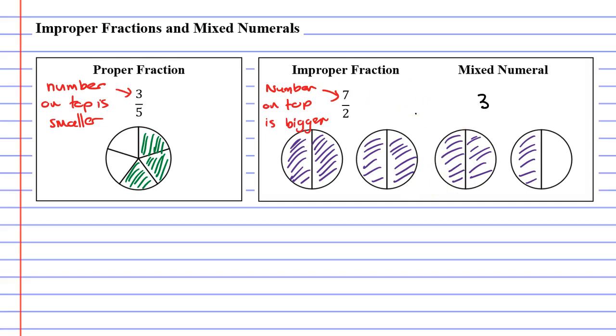You will also notice that we have half a circle colored in. So we represent that as the fraction one half. The improper fraction 7 over 2 and the mixed numeral 3 and a half actually represent the same thing.